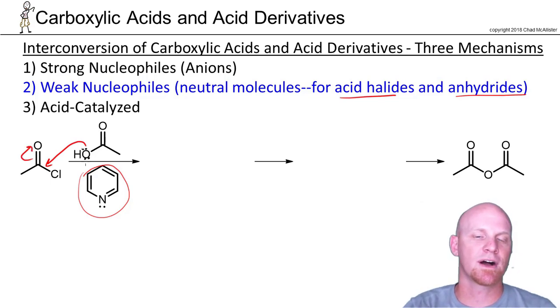So if you notice now, though, with a neutral nucleophile, oxygen here makes two bonds. Normally, he already has two. So he's making a third bond, which is why we're going to have to deprotonate him later.